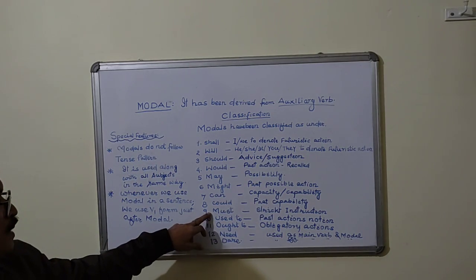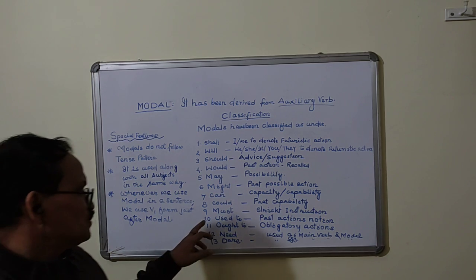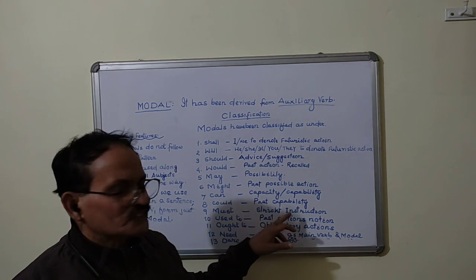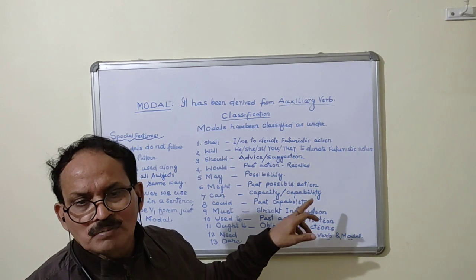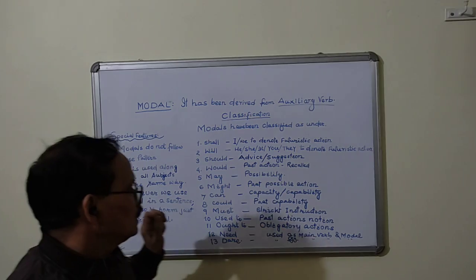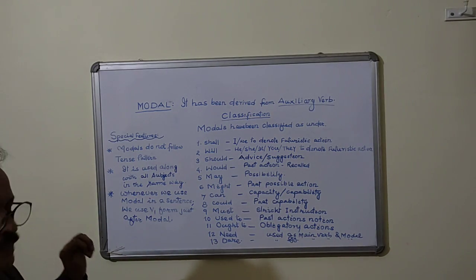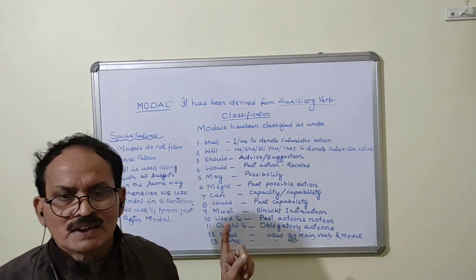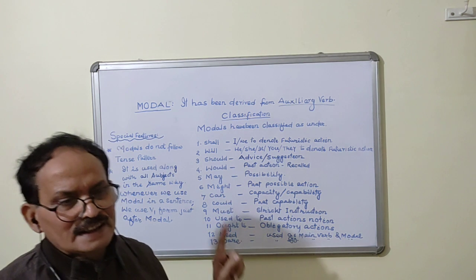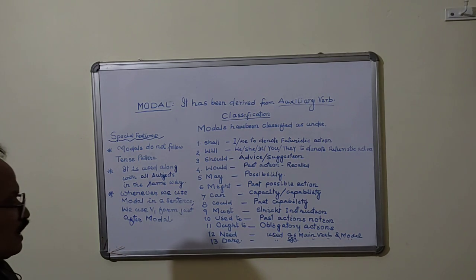Must is used to denote strict instruction that is under obligation or compulsion. For example, you must read properly. It means you are strictly instructed by someone to study properly.